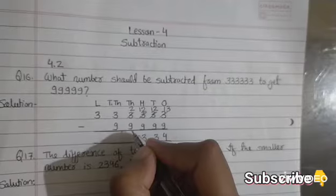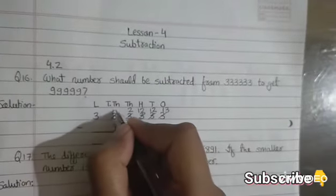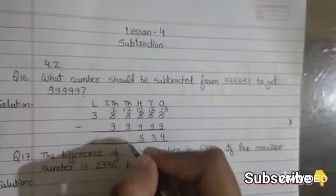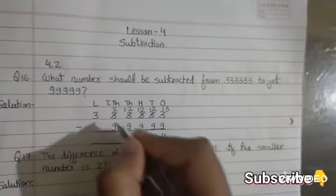2 is smaller than 9, so we will take borrow. This 3 becomes 2, and this 2 becomes 12. 12 minus 9 is 3.